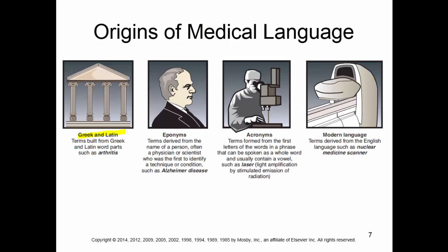For the four origins, the first one is Greek and Latin. For example, terms built from Greek and Latin words such as arthritis. Eponyms are terms derived from the name of a person, often a physician or scientist who was first to identify the condition. For example, Alzheimer disease is named after the physician or scientist that first discovered it.